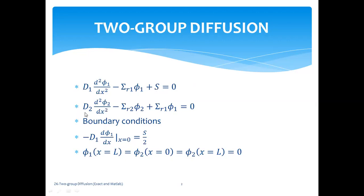In the second group balance equation, we've got the leakage term D2 d²φ2/dx², minus sigma_r2 φ2 plus the downscattering source from the fast group, sigma_12 φ1 equals 0. These are two second-order ODEs with constant coefficients for the moment. So we'll just look at a very basic problem.